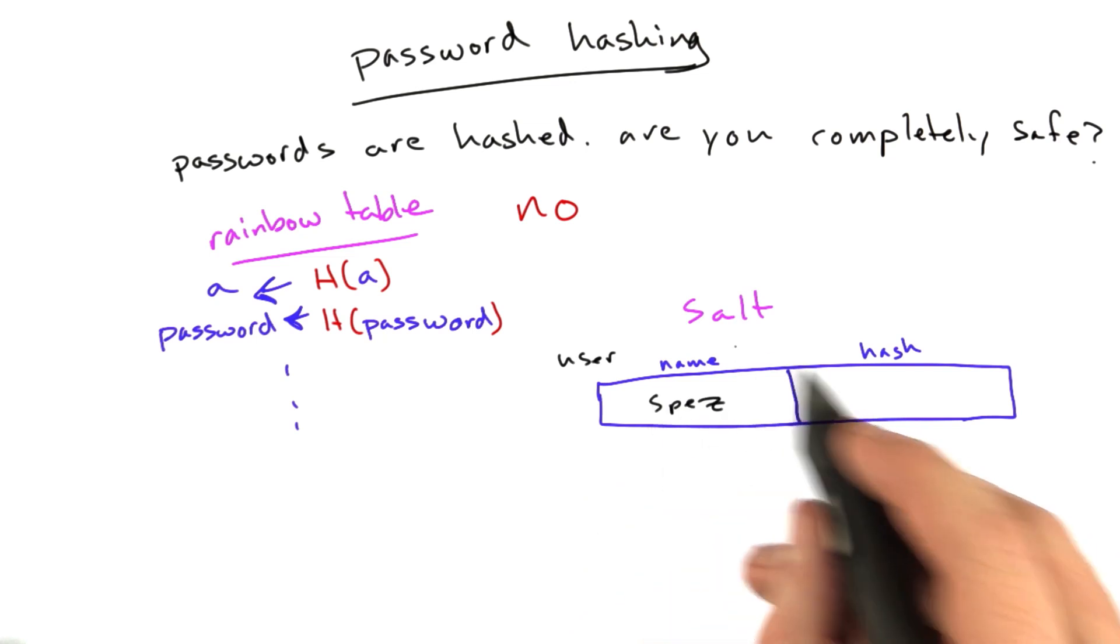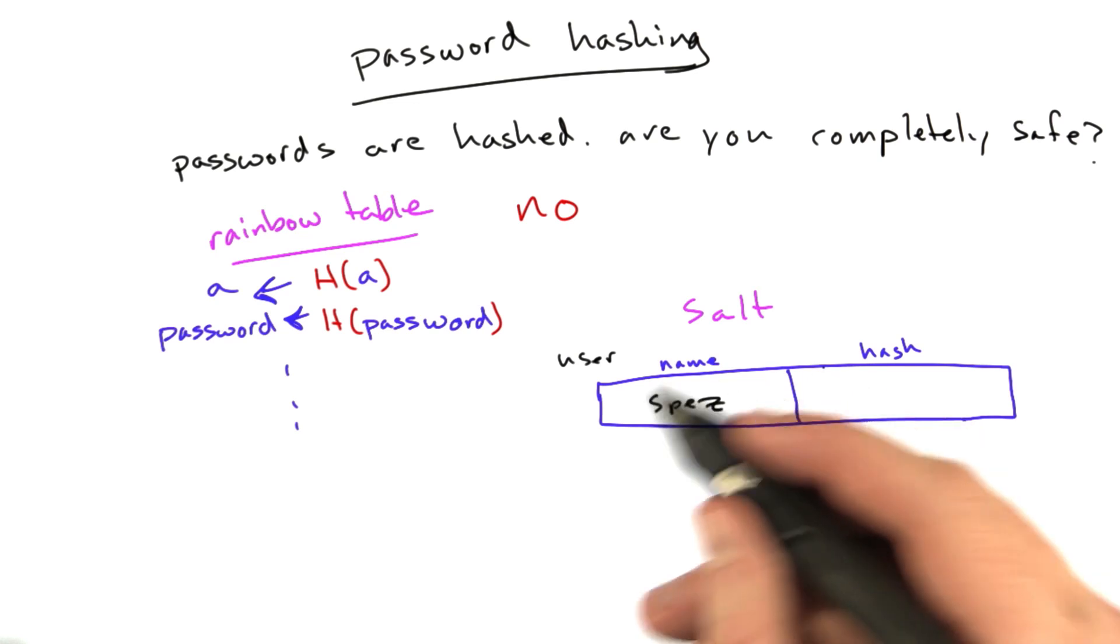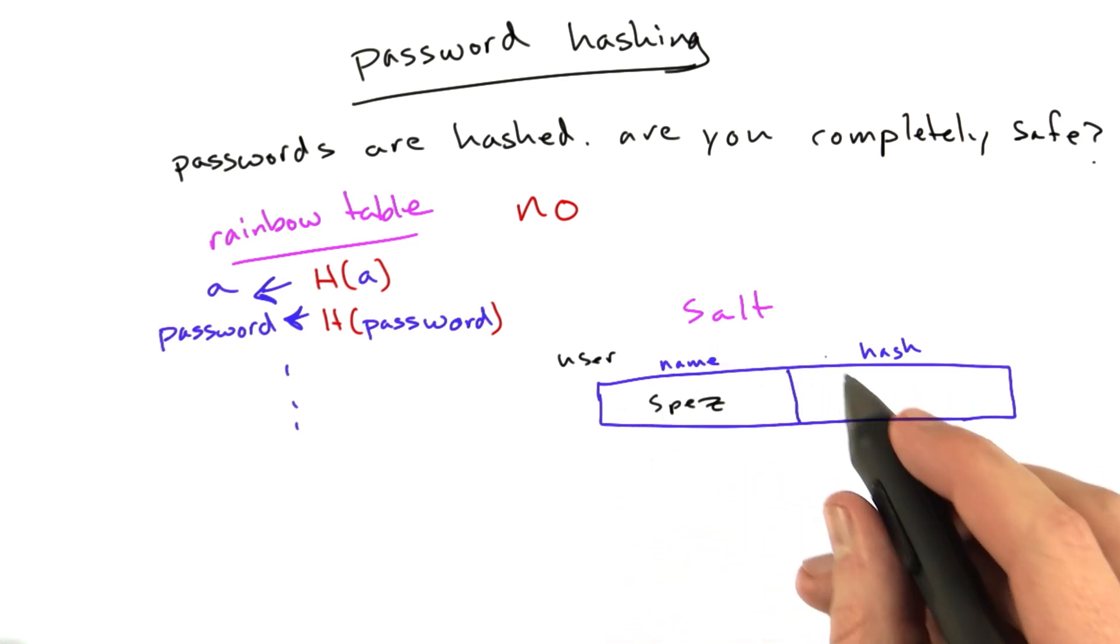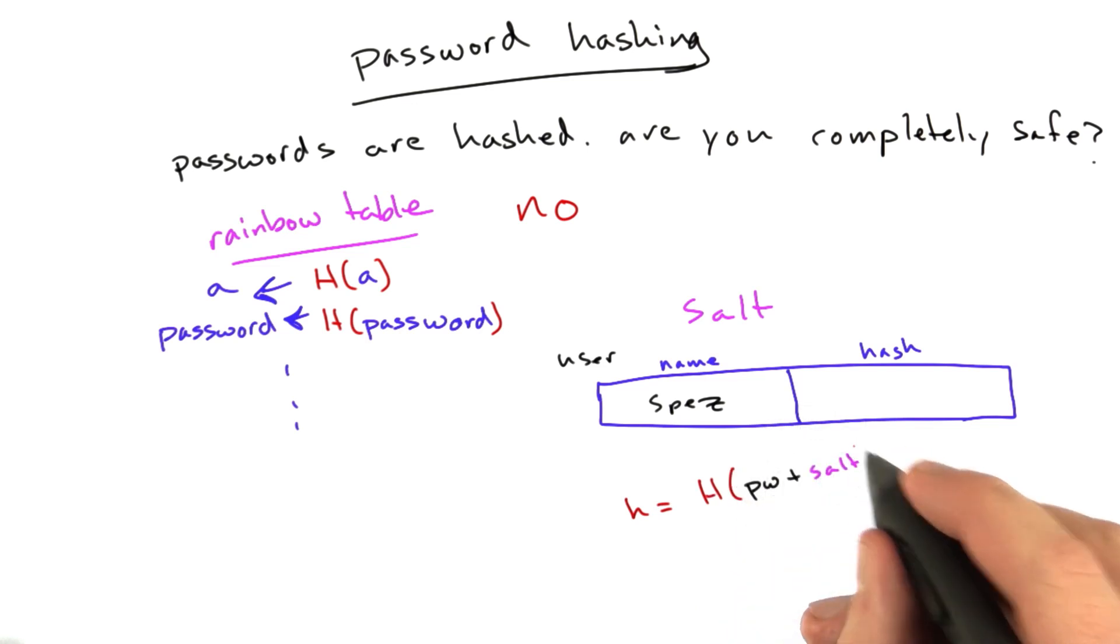So in our user table, we're storing our name, and we're storing a hash of the password. Instead of storing just a hash of the password, we're going to add a secret to it, similar to how we did with the cookies, except this is not really secret. We're just going to say this hash is going to equal our hashing function of the password plus salt.